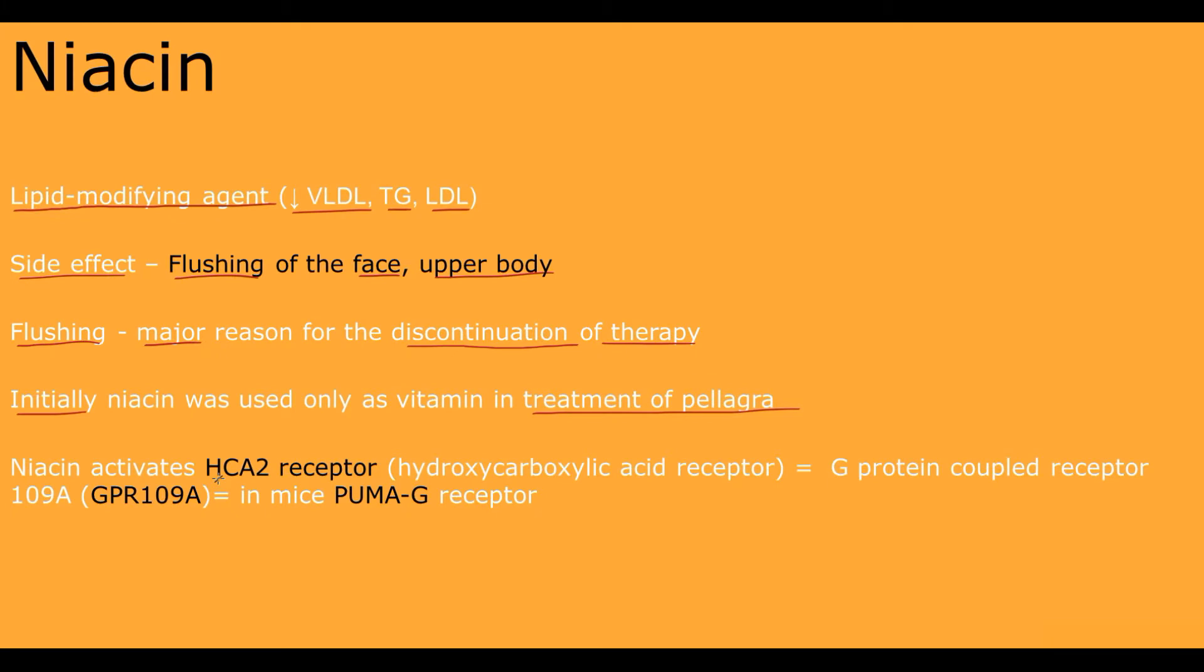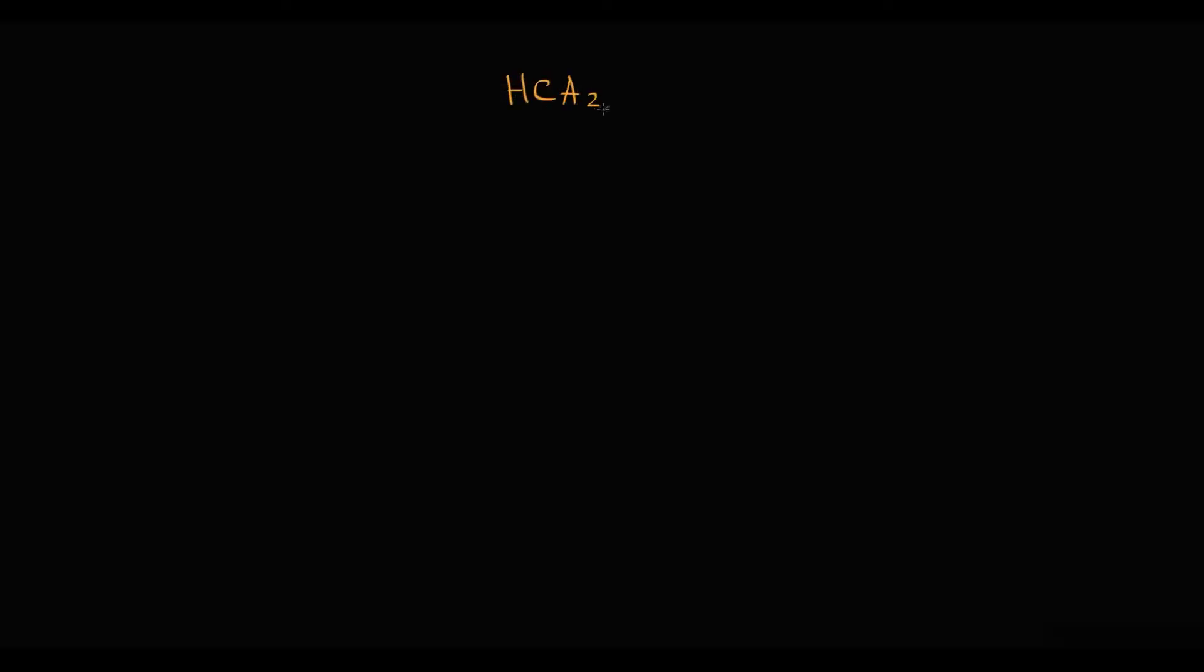Niacin activates the specific receptor called HCA2 receptor, which stands for hydroxycarboxylic acid receptor 2. This receptor is also called G-protein coupled receptor 109A, and in mice this receptor is called PUMAG. So there are many different names for the same receptor.